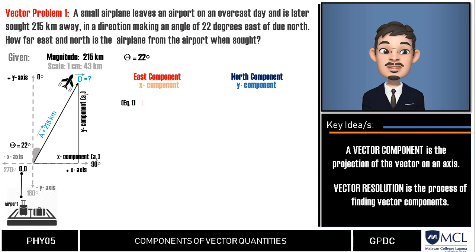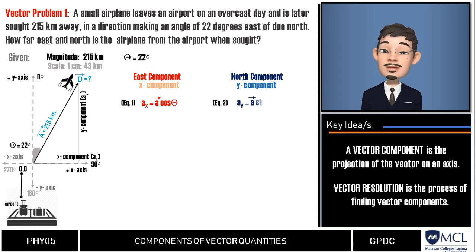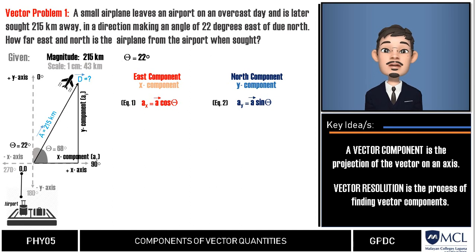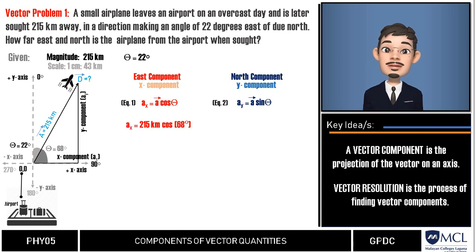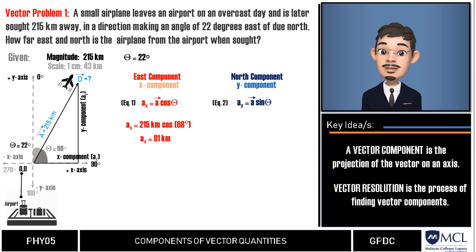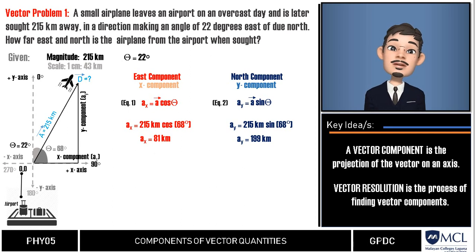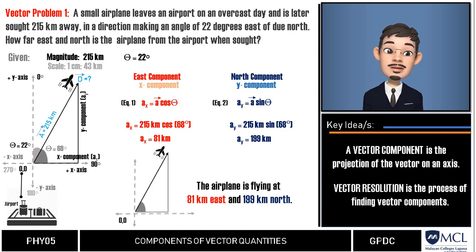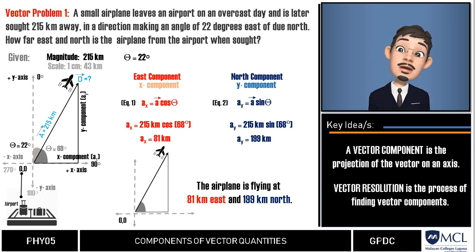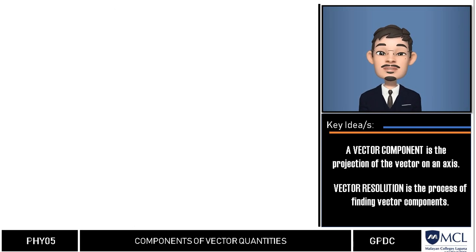Now that we have determined the projections at right angles, we find the components geometrically. The x-component equals the magnitude of vector A multiplied by cosine theta, and the y-component equals the magnitude multiplied by sine theta. Using 68 degrees (the complementary angle), the x-component is 215 km × cos 68° = 81 kilometers. For the y-component: 215 km × sin 68° = 199 kilometers. The airplane is therefore 81 kilometers east and 199 kilometers north of the airport.